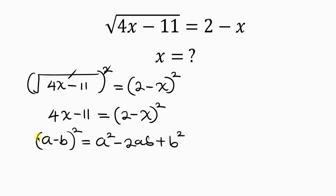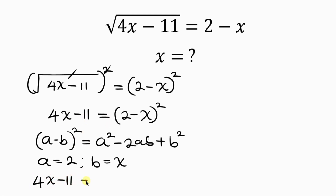Comparing what we have here, a stands for 2 and b stands for x. So expanding: the left-hand side is 4x minus 11, equal to the right-hand side. Expanding in this form gives us a squared, that's 2 squared, minus 2 times a times b — that is 2 times 2 times x — plus b squared, which is x squared.